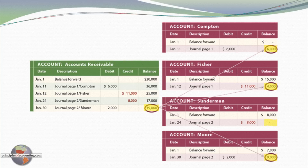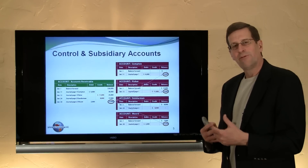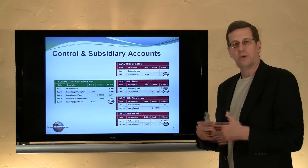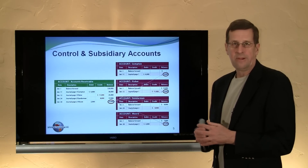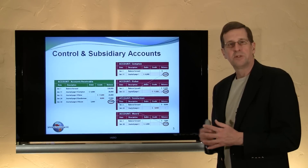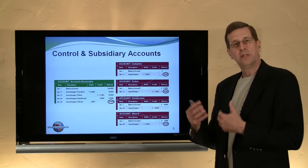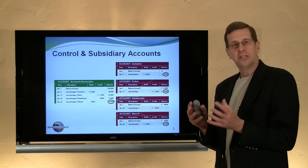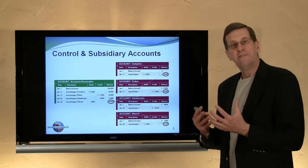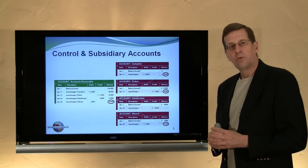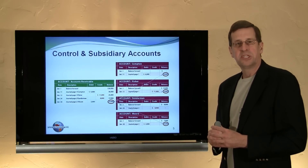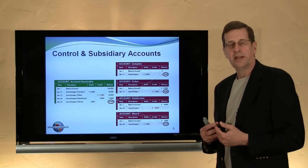Notice it's important in the reconciliation that the $19,000 total be identifiable by individual customer. What other accounts might involve subsidiary accounts? You would also have the potential for subsidiary accounts related to accounts payable, and to land, buildings, and equipment — to show not only how much you have in total, but what individual amounts comprise that ledger balance. There are any number of opportunities where subsidiary records are beneficial.